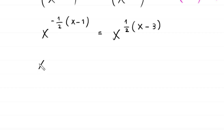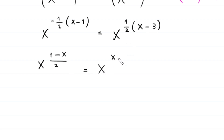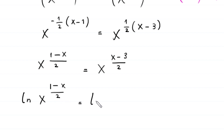Next, applying the property a to the power m, whole to the power n equals a to the power m times n: the left side becomes x to the power negative 1 over 2 times x minus 1, and the right side becomes x to the power 1 over 2 times x minus 3. Simplifying, the left side exponent is 1 minus x divided by 2, and the right side exponent is x minus 3 divided by 2. From here we take the natural log of both sides.